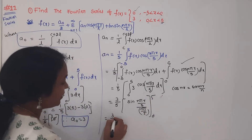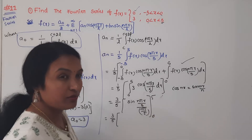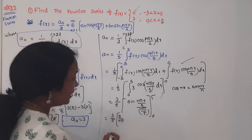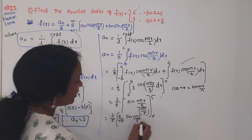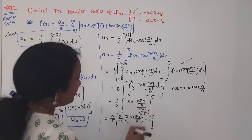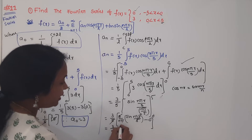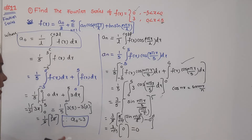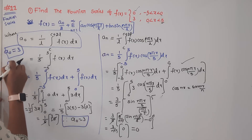Substituting the upper limit x = 5: sin(nπ × 5/5) = sin(nπ) = 0. Minus the lower limit: sin(0) = 0. Therefore Aₙ = 3/nπ × (0 − 0) = 0. So A₀ = 3 and Aₙ = 0.